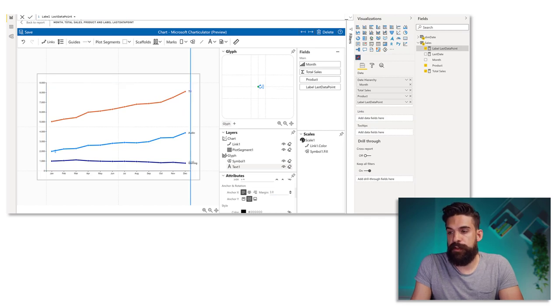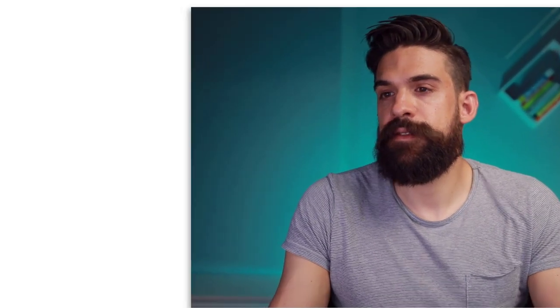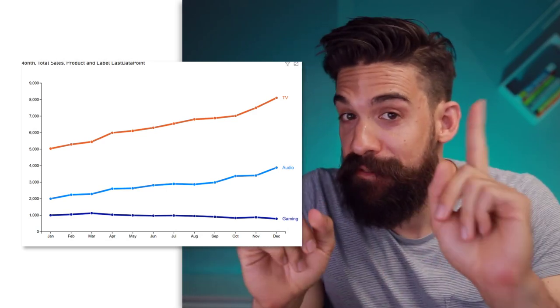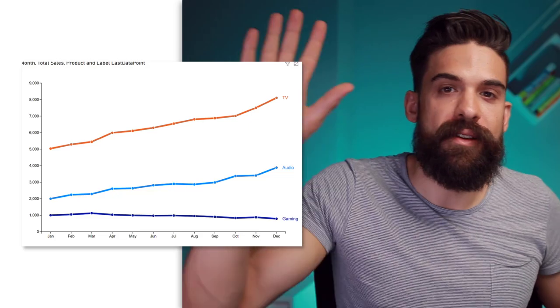Then if you also want to have different colors, you can go to Style and drag Product onto color. Click on save and go back to your report. There we have our line chart with a y-axis and the series name at the end of the last data point. So quite a lot of effort to get to this result, and hopefully this gets easier going forward — however for now this is a workaround. Maybe you know a different workaround to get to a similar result — let me know in the comment section below. And if you got some value out of this video, consider subscribing, and I hope to see you in the next video.